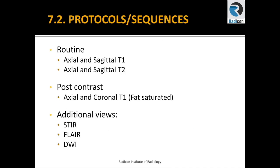An important question is: what sequences should be performed? The routine in my department is two axials and two sagittals — T1 and T2 for each. In trauma patients, we add a sagittal STIR sequence, as it is more sensitive for otherwise occult bony injury, particularly end-plate compressions. Post-contrast images are added for cases with previous or recent surgery, infections, and masses. You can also consider DWI — diffusion-weighted imaging — for suspected discitis when contrast cannot be given.